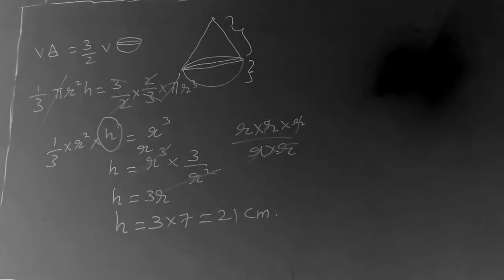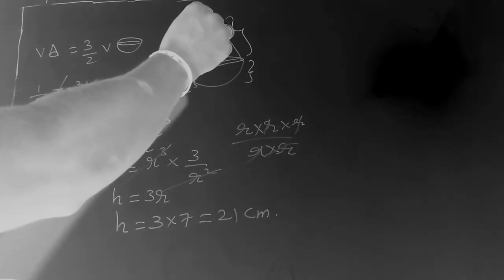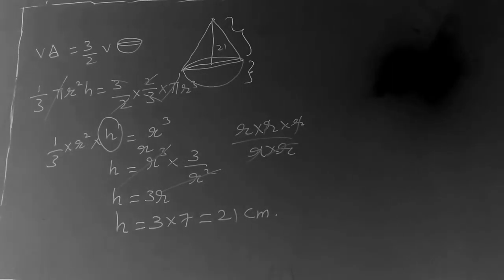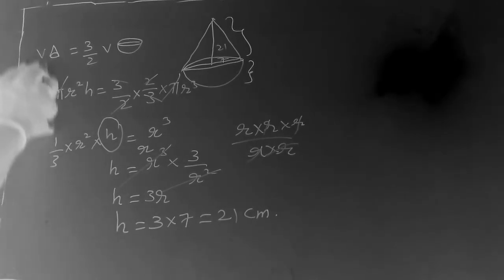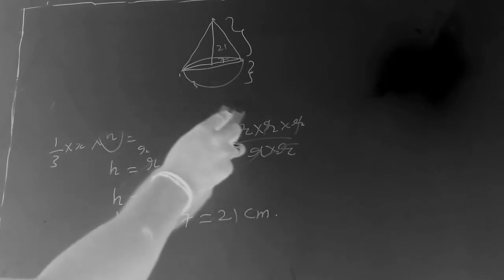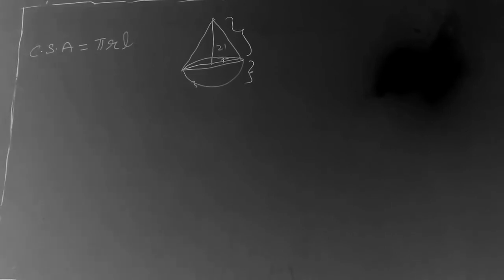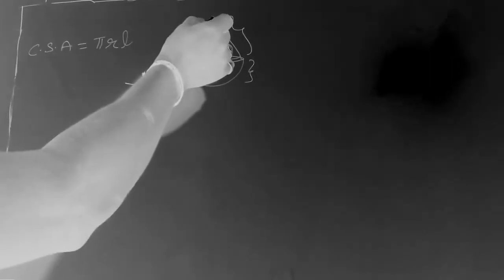Now we have to find the curved surface area of the cone. The radius is 7 cm and the formula is CSA = πrl, where l is the slant height. The slant height is not given, so we need to find it first. Using the right-angle triangle formed by the cone, we apply the Pythagorean theorem.